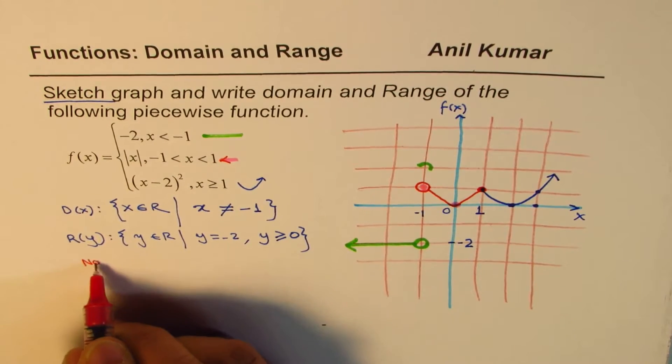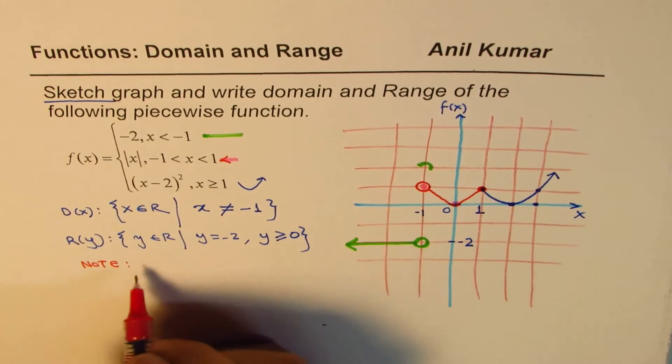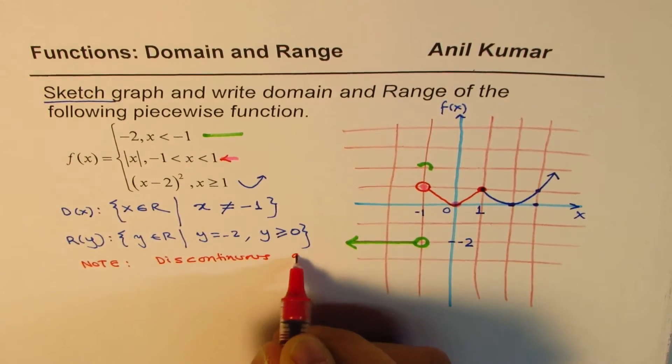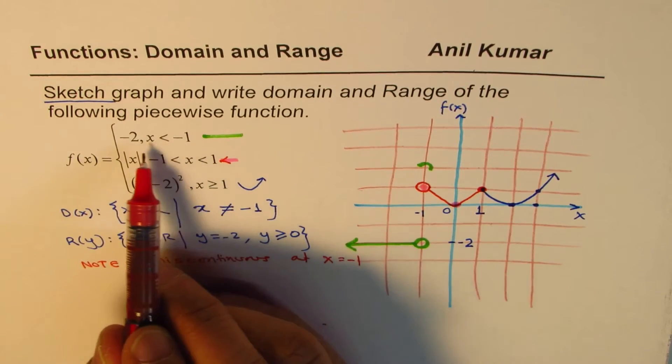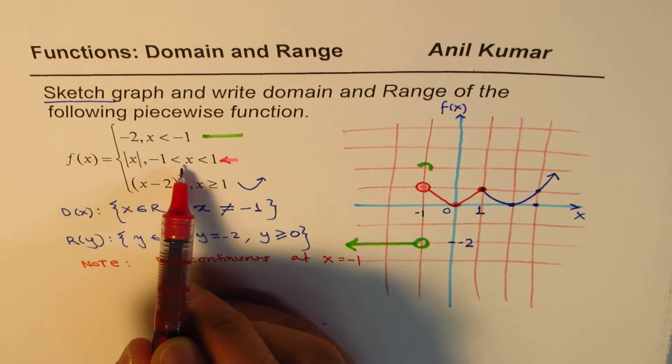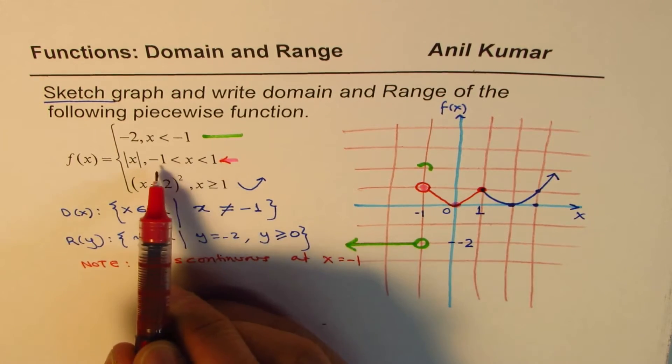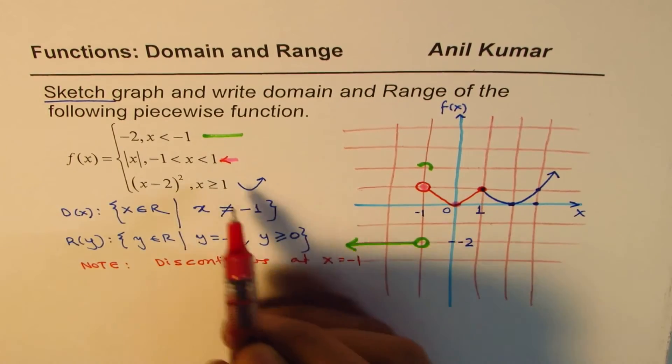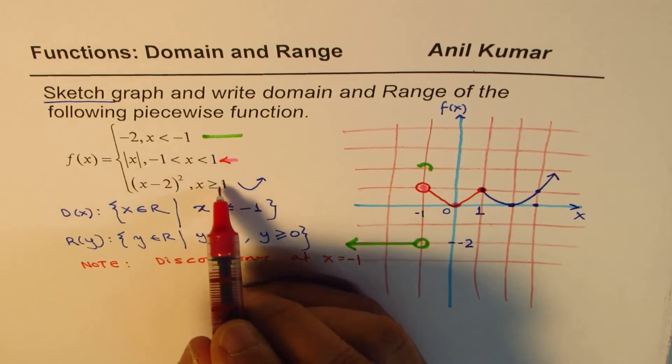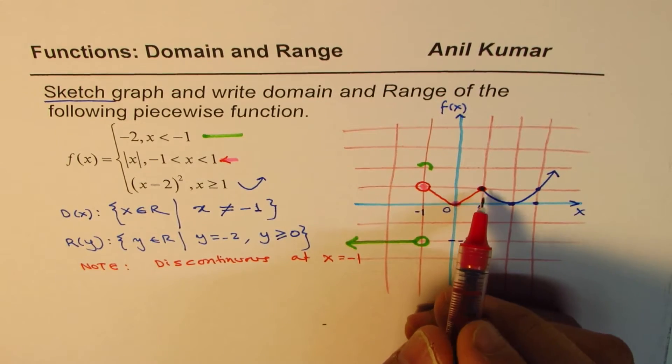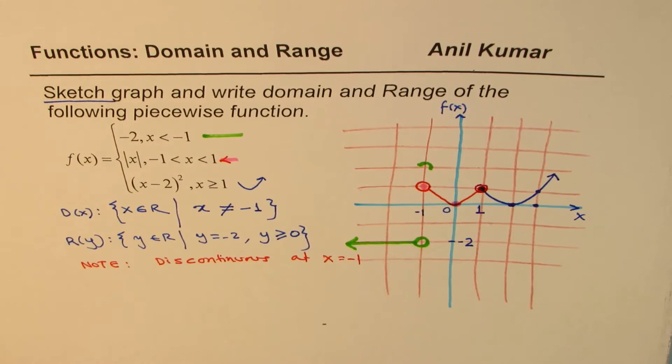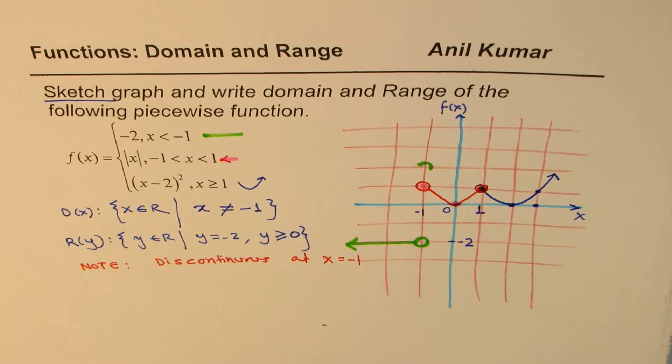Now here, you also note that the function is discontinuous at x equals to minus 1. Since we have x less than minus 1, it is minus 2. And when x is between minus 1 and 1, both not included, it is absolute function. Both not included. But however, at 1, since the value for the second and the third matched, we have a filled-in graph. So this was actually a circle here also, a circle there. And this filled-in was because of the parabola. So that is another correction here in this video. So now it is clear.